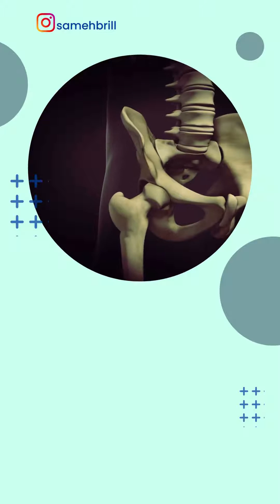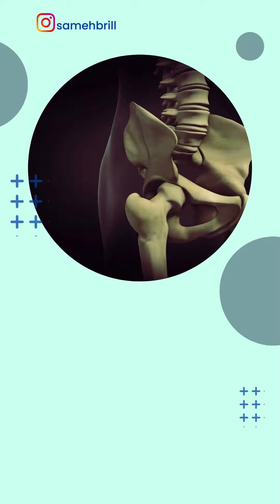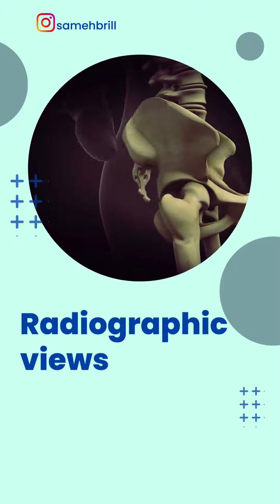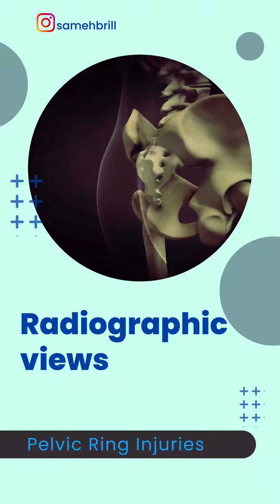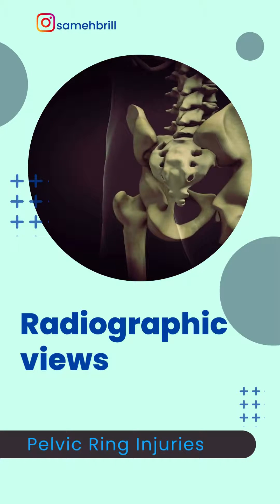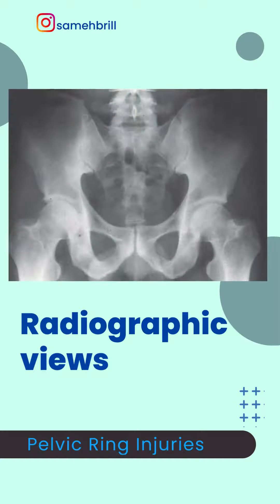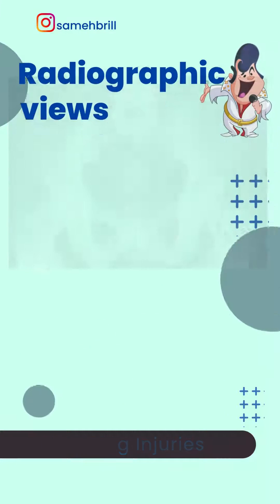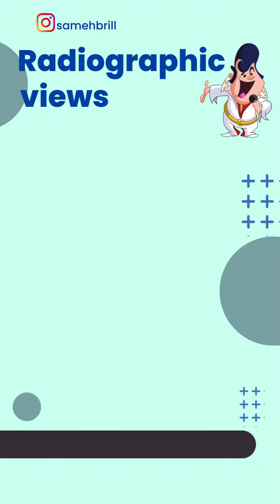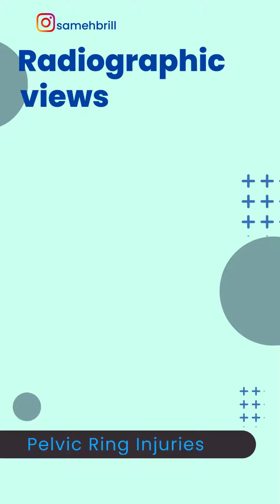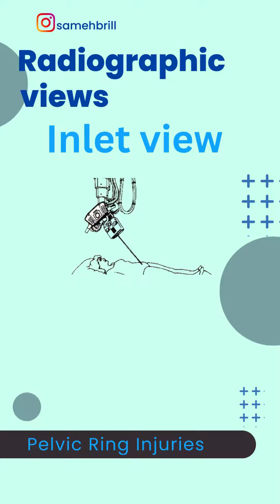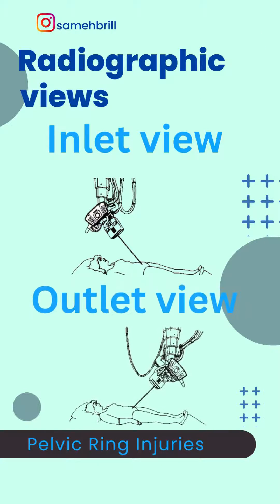Hey there and welcome back. Today we will talk about the radiographs needed to evaluate pelvic ring injuries. Other than the AP view of the pelvis, additional radiographs are required to evaluate the extent of injury to the pelvic ring. We have two main radiographic views for pelvic ring injuries: the inlet view and the outlet view.